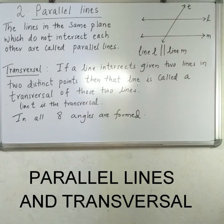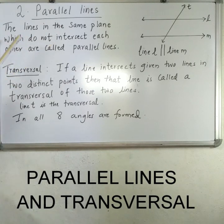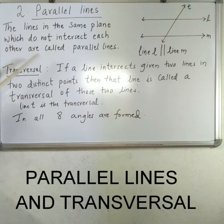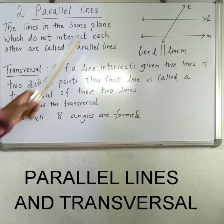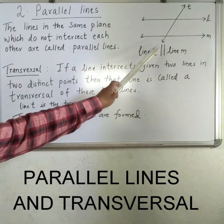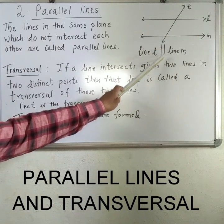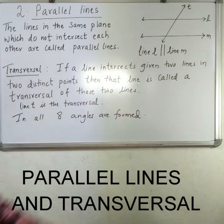Today we are going to learn the second chapter: parallel lines. What are parallel lines? The lines in the same plane which do not intersect each other are called parallel lines. In this figure, line L — this is the symbol of parallel — is parallel to line M.